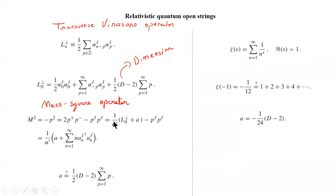When we write the mass-square, remember L_n — the transverse Virasoro operator also comes into picture. That is this term here. So here also we will have this additive constant, because these are operators and the fact that they do not commute will be reflected in this constant.